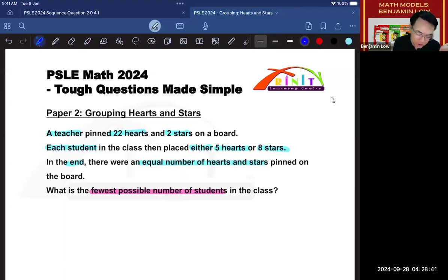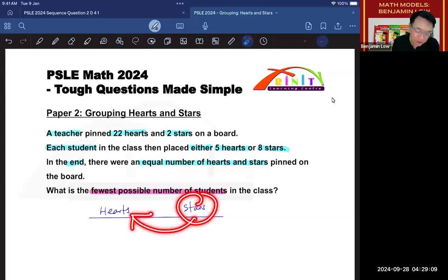First of all, let's be organized. Let's write down that the hearts already has got 22, and the stars already has got 2. So basically, the first thing you want to ask yourself is, how far apart are these two numbers? Because we want to make sure that the stars are able to catch up with the hearts. So I take 22 minus 2 and I get 20.